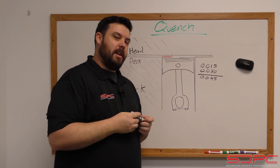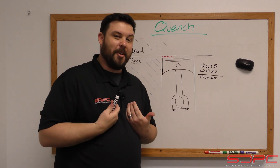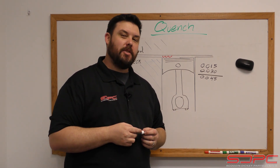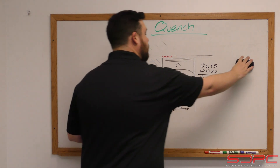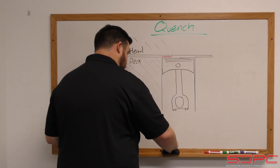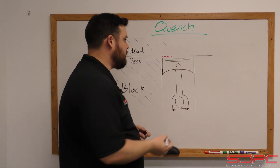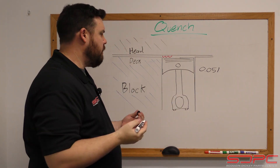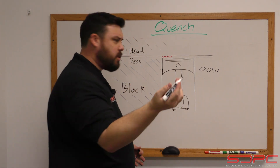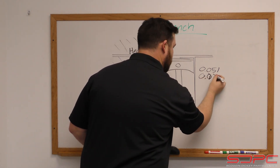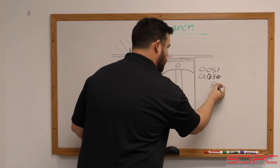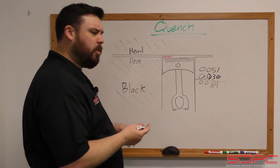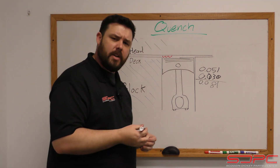The problem is, if you're a small block guy — and like me, I grew up a small block guy — and you graduated up to the LS and LT platforms, you might be trying to use some of that same theory. You might think the factory LS head gasket, usually 51 thousandths, is ridiculous and too thick. So you add that to 30 thousandths and you get an 81-thousandths quench. Even with an aluminum block that expands a little when it gets hot, that's too much — so you want to find a thin head gasket.